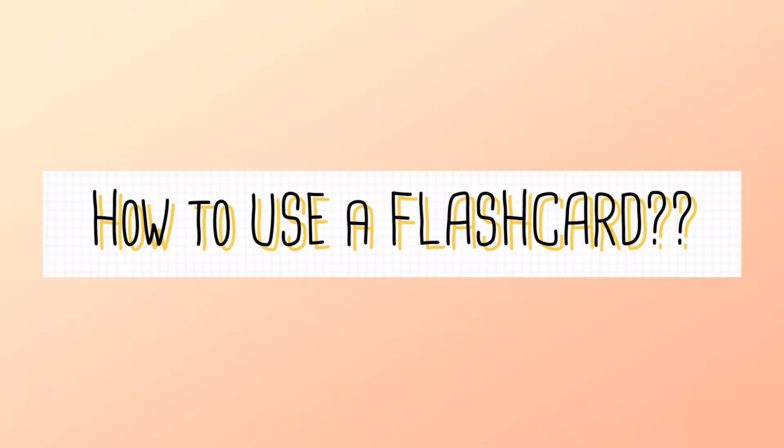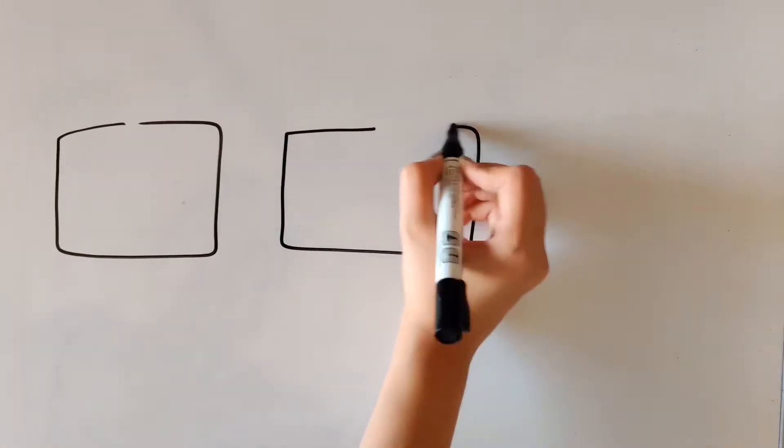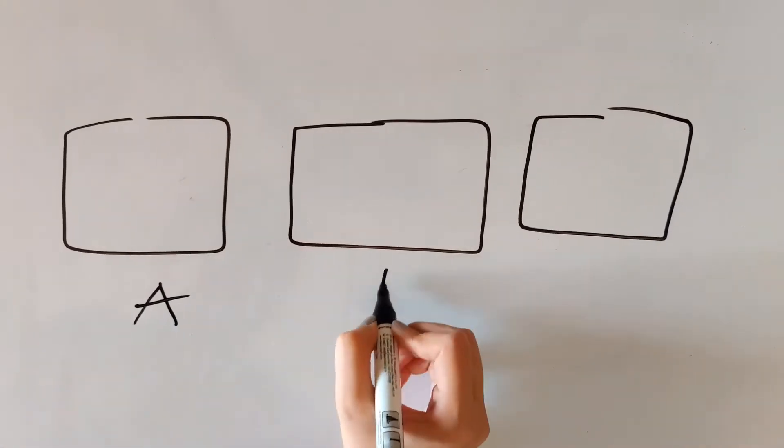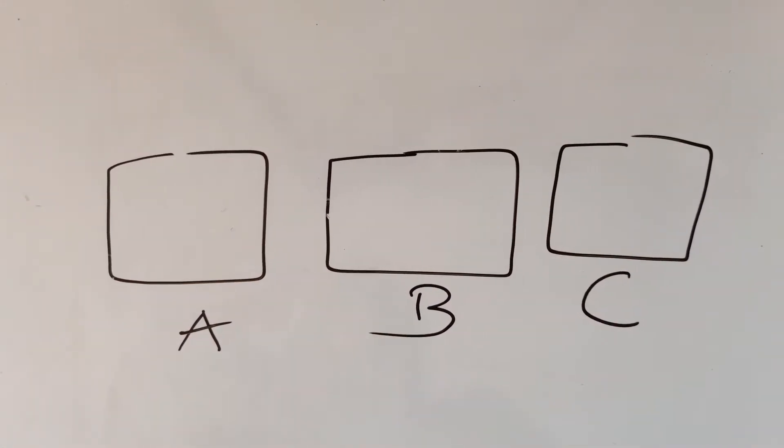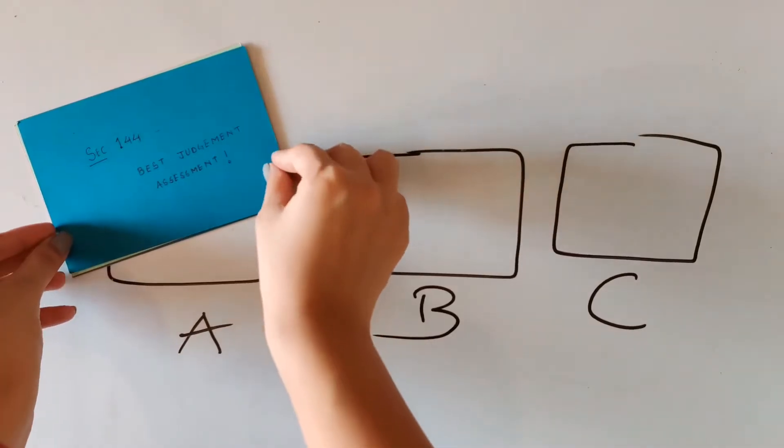So, now that we know how to make a flashcard, let's understand how to use one. You need to have three boxes for this, namely A, B and C. Now, put all your flashcards in the first box.